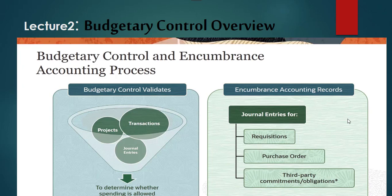Budgetary control and encumbrance accounting are two independent features. Budgetary control refers to a group of system options and processes used to determine which transactions are subject to validation against budget and budget consumption, in order to prevent overspending.